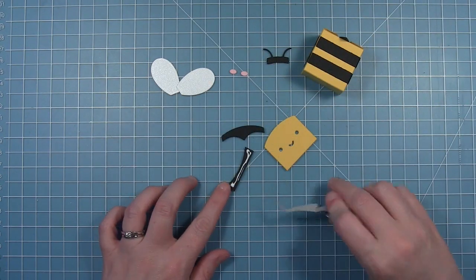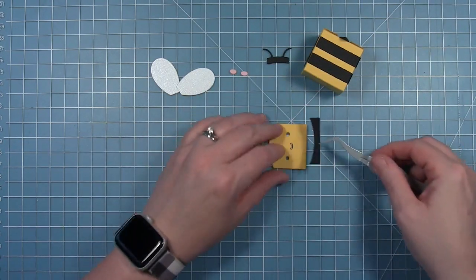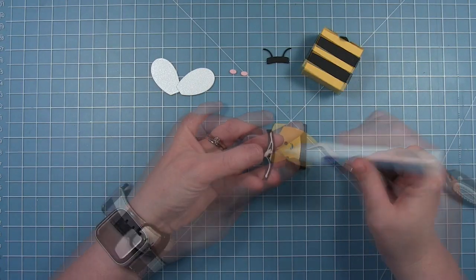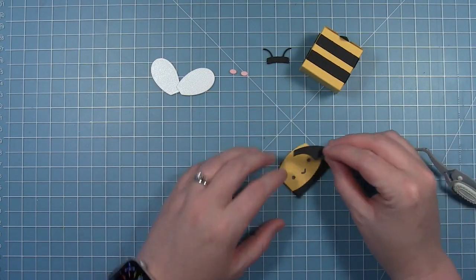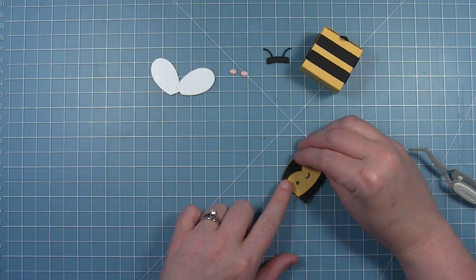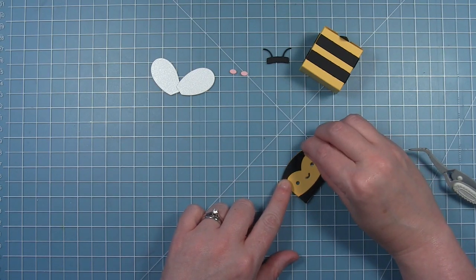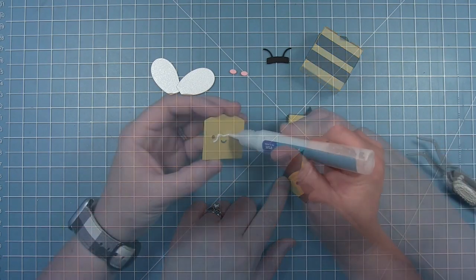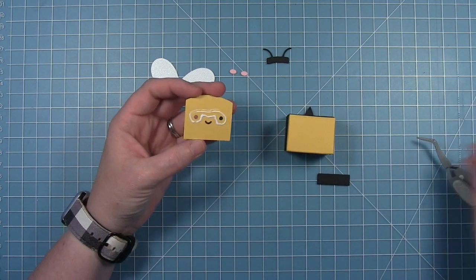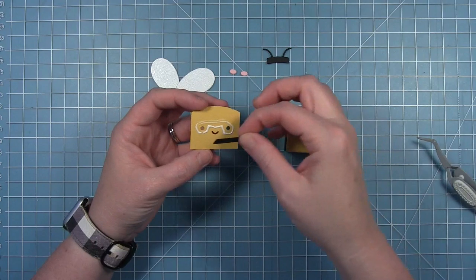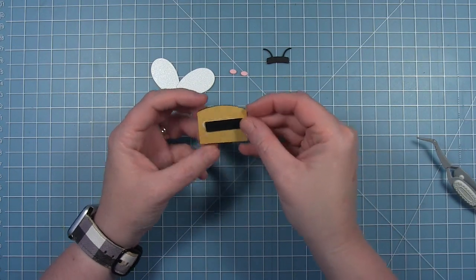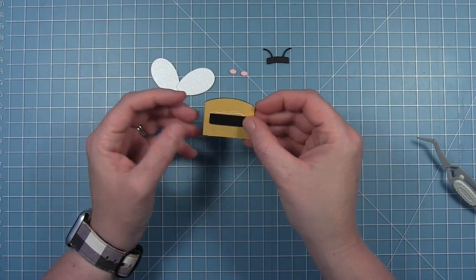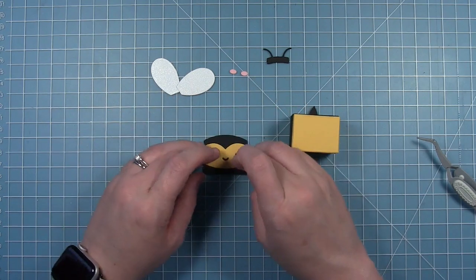Now to work on the face of my bumblebee here. This piece layers on the bottom of this front piece and then this one will layer on the top to create his little head. I've just cut a piece of black cardstock to fit behind his eyes and his mouth, so I'm just going to glue that to the back side so that they are black on the front.